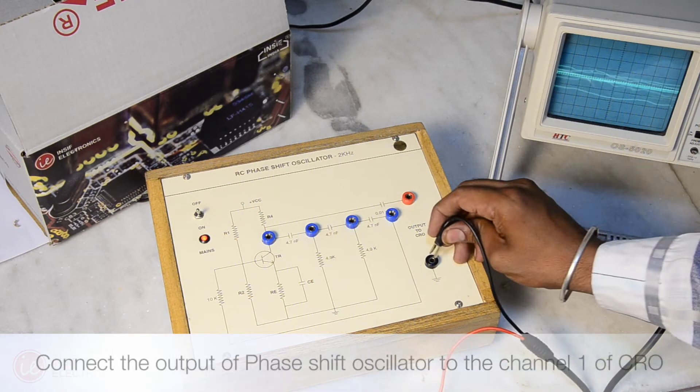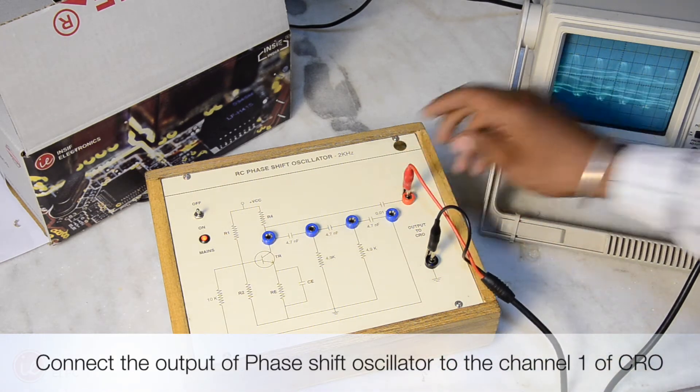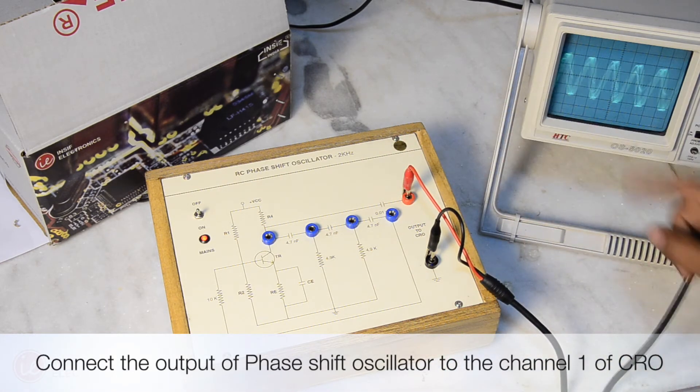Now let's start the experiment. Connect the output of phase shift oscillator to the channel 1 of CRO.